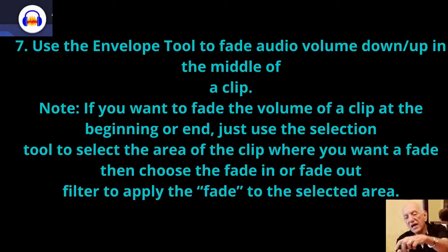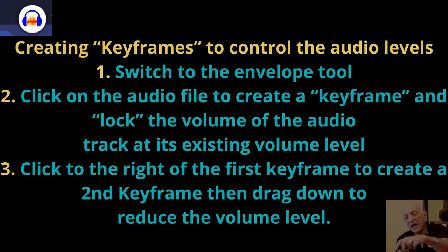Tip 7: Use the envelope tool to fade audio volume down or up in the middle of a clip. Note: If you want to fade the volume at the beginning or end of a clip, use the selection tool to select that area, then choose the Fade In or Fade Out filter to apply the fade.